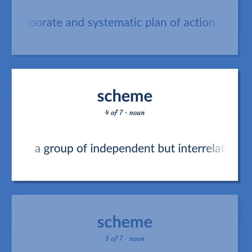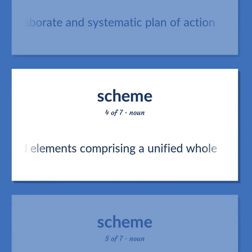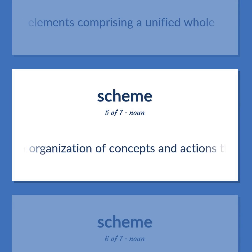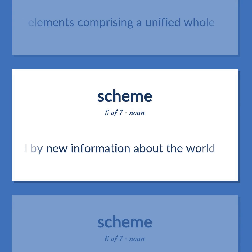System: A group of independent but interrelated elements comprising a unified whole. An internal representation of the world — an organization of concepts and actions that can be revised by new information about the world.